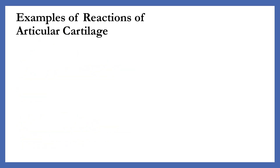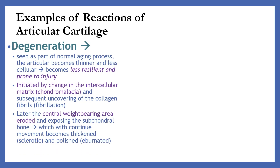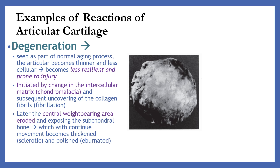Another reaction of articular cartilage is degeneration. As seen as part of the normal aging process, the articular cartilage becomes thinner and less cellular, then becomes less resilient and prone to injury. It is initiated by changes in the intracellular matrix, or chondromalacia, and subsequent uncovering of the collagen fibrils, or fibrillation. Later, the central weight-bearing area erodes and exposes the subchondral bone, which with continued movement becomes thickened or sclerotic, and polished or eburnated.